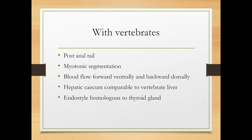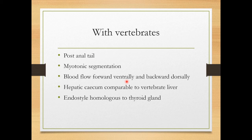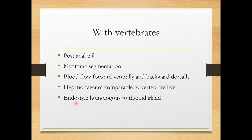Regarding affinities with vertebrates: there is post-anal tail, myotomic segmentation where muscles are segmented, and blood flows forward ventrally and backward dorsally — similar to vertebrates. The hepatic cecum is comparable to the vertebrate liver. The endostyle is homologous to the thyroid gland, which is present in vertebrates, making the endostyle the primitive form of the thyroid gland.